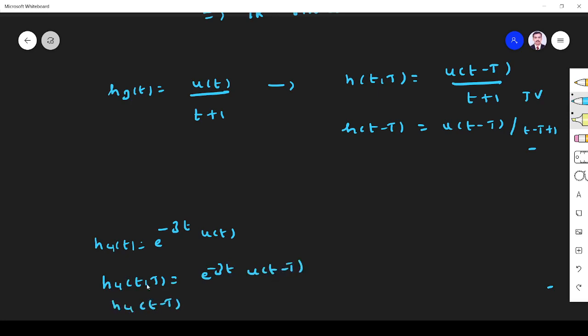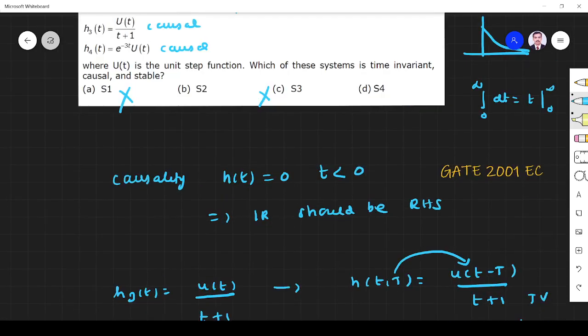So H4(t,τ) is given by e^(-3t)U(t-τ). H4(t-τ), replace t by t-τ. So wherever you find t, you have to replace. Here we have to replace the function only, in second the same thing. Here we have to replace function, here we have to replace everything. Because left hand side t is replaced by t-τ, so U(t-τ). These two equations are not equal. So it is time variant.